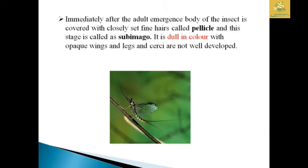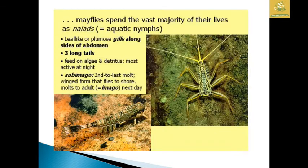Immediately after adult emergence, the insect has a close fine hair covering known as the pedicel. This stage is called the subimago and it is dull in color with opaque wings; the legs and cerci are not well developed. The naiad spends the vast majority of its life in this stage.